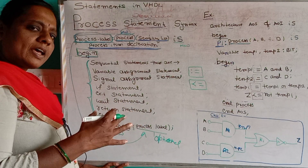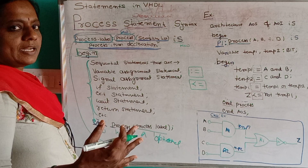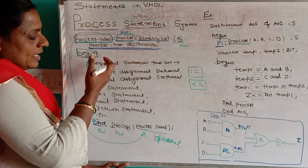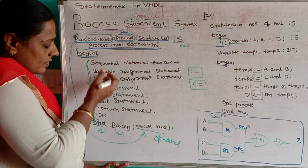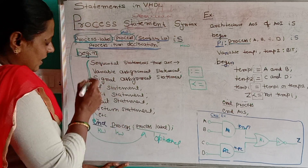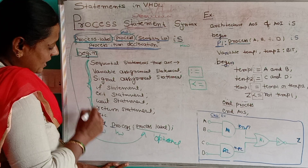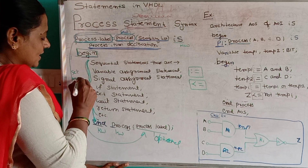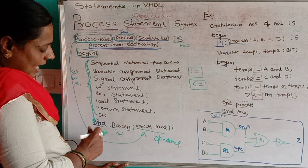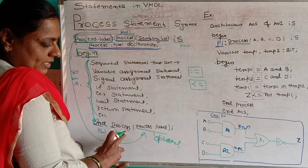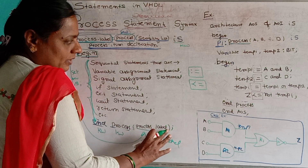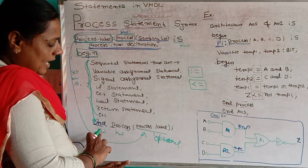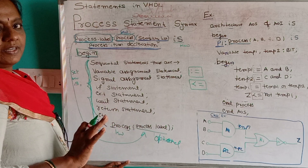In this way, VHDL has different sequential statements. According to your program, you can write any number of sequential statements — this is a set of sequential statements. Afterwards, write 'end process'. If you are using the process label, then you should end with the process label as well. 'End' and 'process' are keywords.